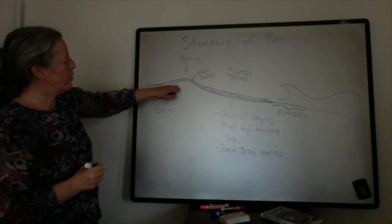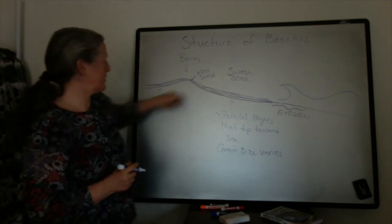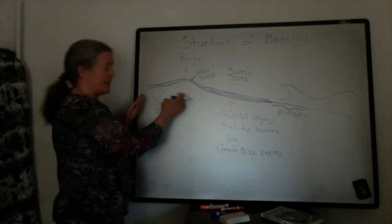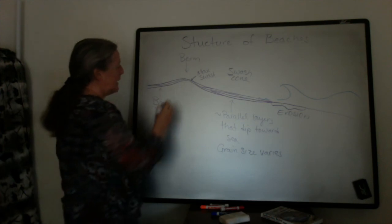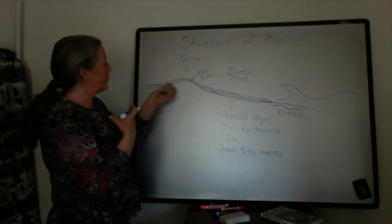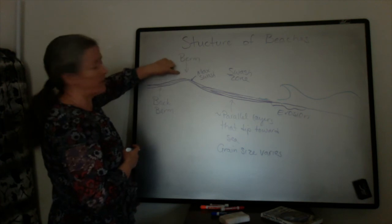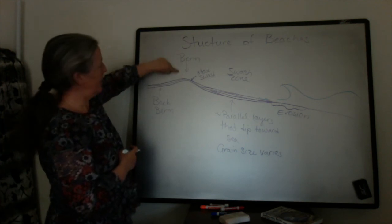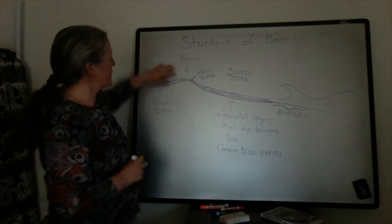While most of the beach deposits are in layers that are dipping towards the ocean, there is this transition to a back berm deposit. And if the beach migrates away, it will leave this topographic high that is eventually called a beach ridge.